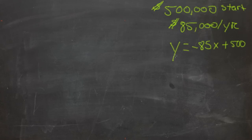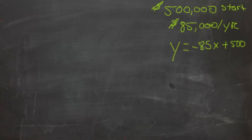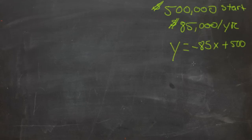That would be how much they're currently in debt. On the first year they wouldn't have paid off anything, so we'd have negative eighty-five times zero and they'd owe five hundred thousand. Then in the second year we'd have negative eighty-five thousand times one, or negative eighty-five thousand plus five hundred thousand — so essentially we're subtracting this from this.